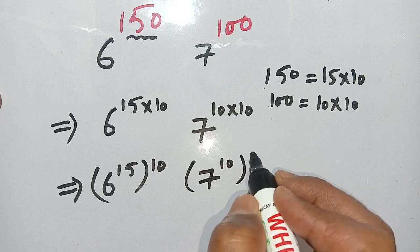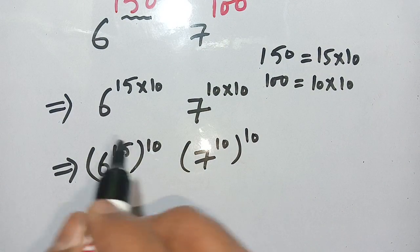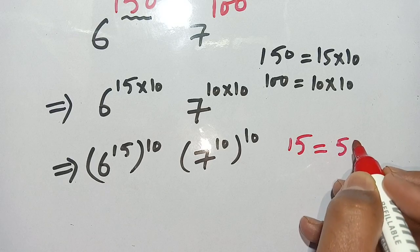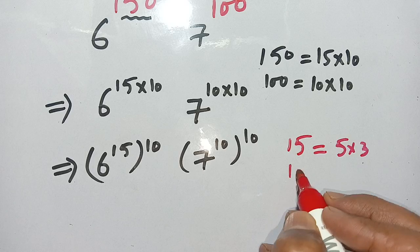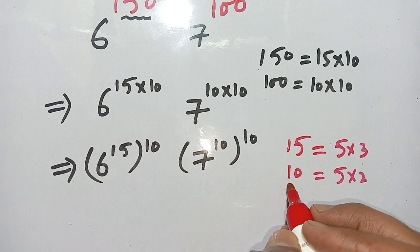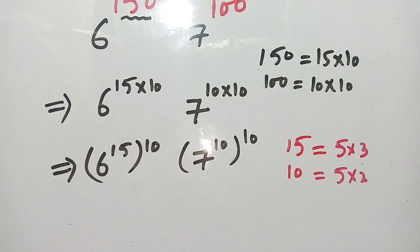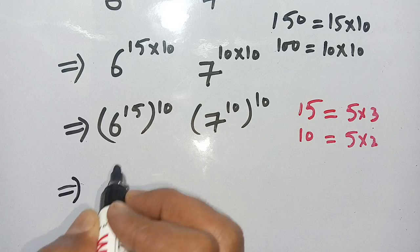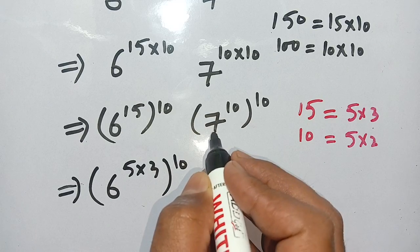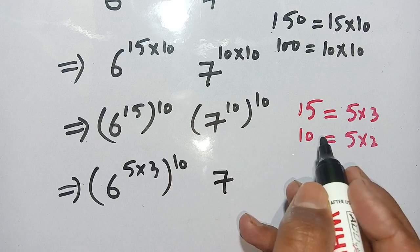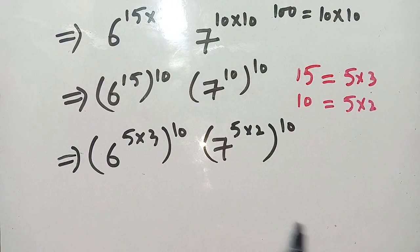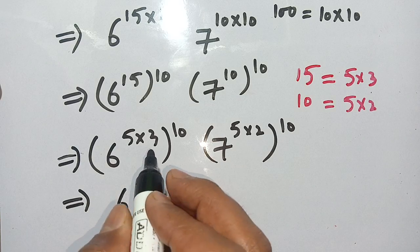Now, 15 and 10 are both multiples of 5. We can write 15 as 5 times 3, and 10 as 5 times 2. Substituting, we get 6 raised to the power (5 times 3), all to the power 10, and 7 raised to the power (5 times 2), all to the power 10.